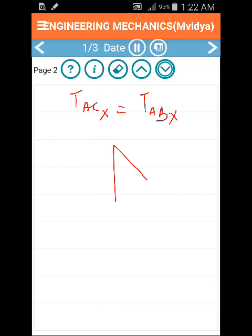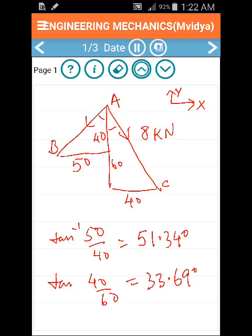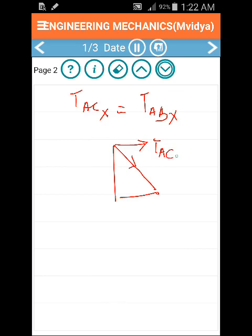If we draw the triangle separately, AC can be resolved into the X component, which is horizontal, and the Y component.